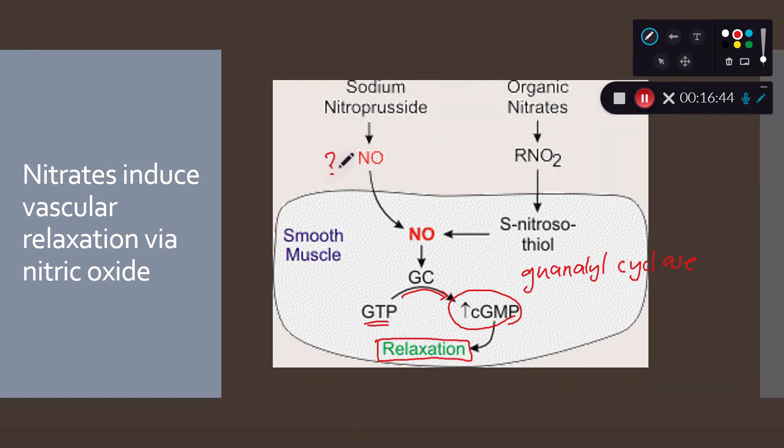So how do we get nitric oxide into the system? Well, you can simply give people nitric oxide and that works, and if someone's having a heart attack that's one of the things you can do. But you can also add it in the form of nitric oxide donors such as sodium nitroprusside or organic nitrates.